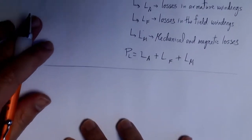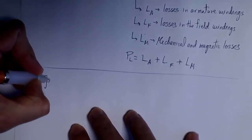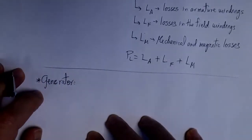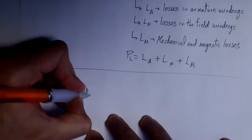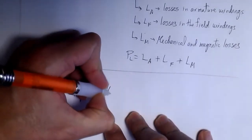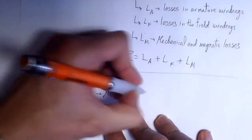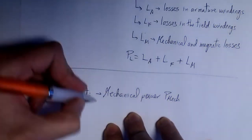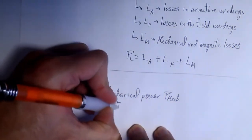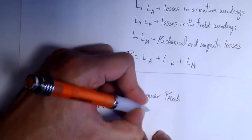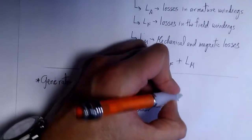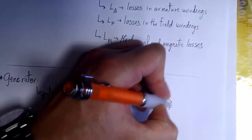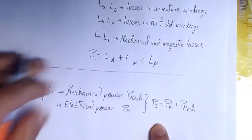Things are similar for generators, but in a generator the output is purely electrical — we get electrical power at the output. At the input, we have mechanical power to rotate the rotor of the generator. We also need to apply electrical power to the field windings in order to create a magnetic field inside the generator. So the total input power is the electrical power applied to the field windings plus the mechanical power.